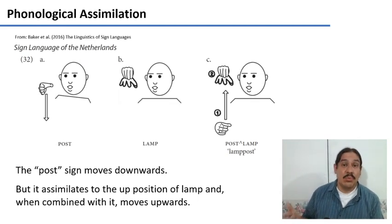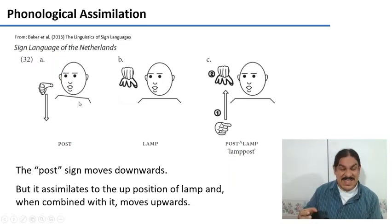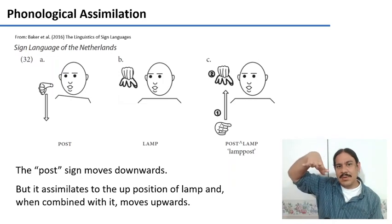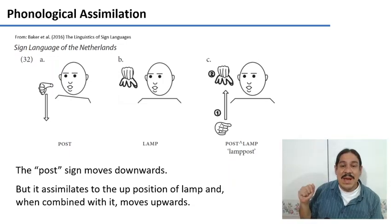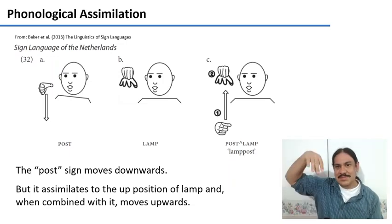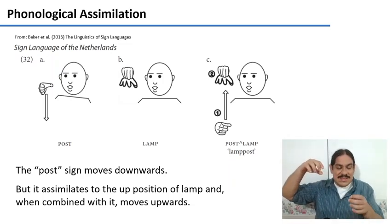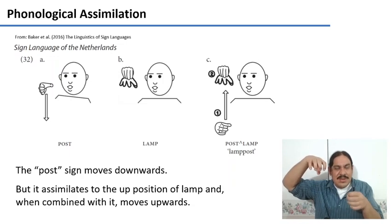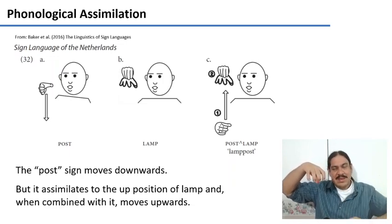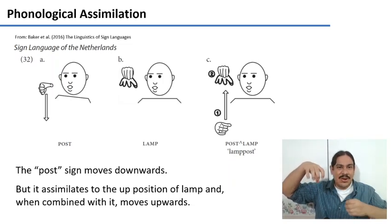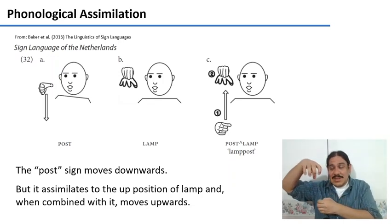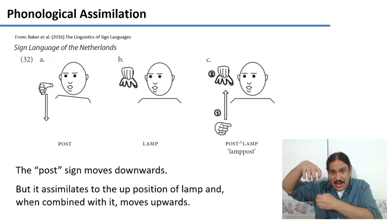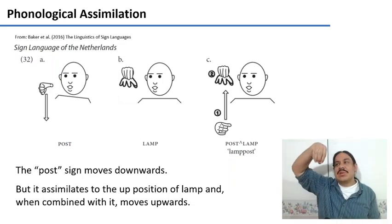Sign languages also have rules like phonological assimilation. So take a look at these words. Here you have post with a downward motion, and you have the word lamp without motion but coming from the upwards direction. If you want to combine them to say lamppost, like this, then you need to assimilate the post sign to the position of lamp. Originally post was going downwards. However, when these two signs are next to one another, the position of this one assimilates the motion of post, so that post no longer moves downwards, it moves upwards.